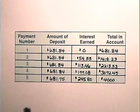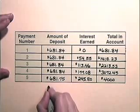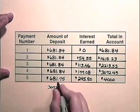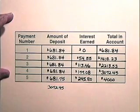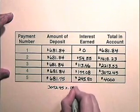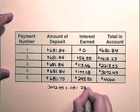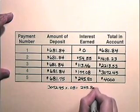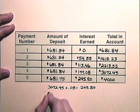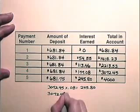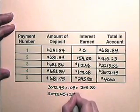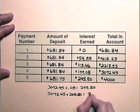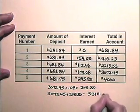So the fifth year a payment is made of $681.75. Why is the payment $681.75? The reason is because the total in the account was $3,072.45. $3,072.45 times 8% gives us interest in the amount of $245.80. So $3,072.45 plus $245.80 gives us $3,318.25.